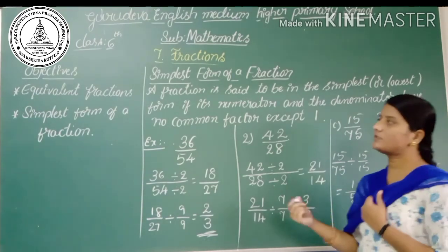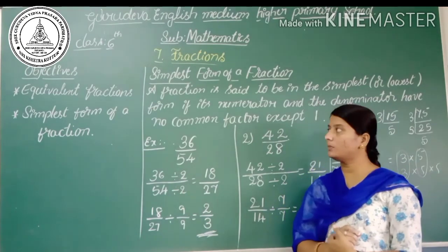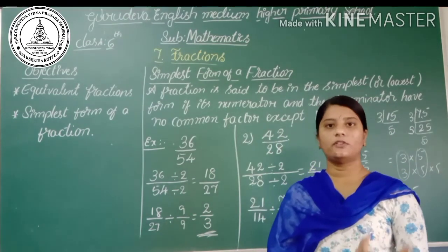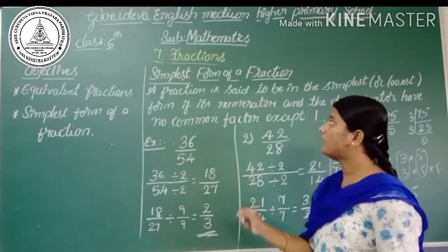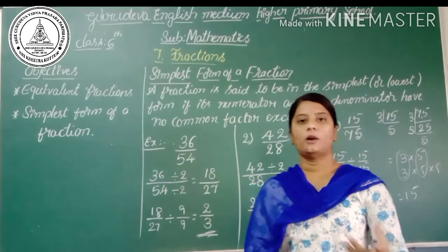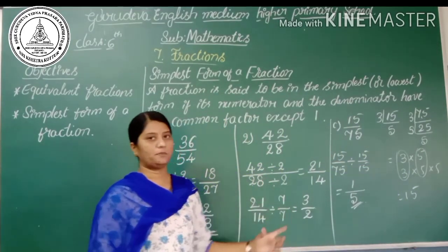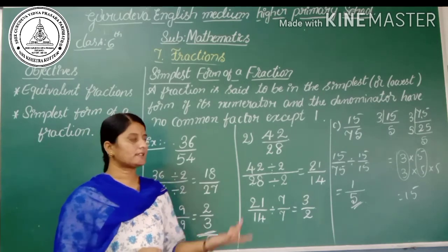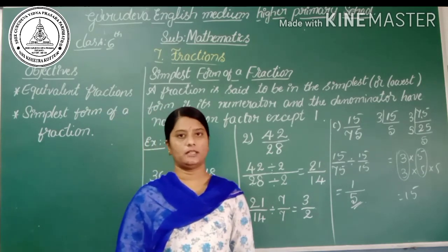In this class we have learned how to write the equivalent fractions of a given number, how to check whether two given fractions are equivalent or not, and how to write a fraction in its simplest or lowest form. In the next class, we are going to solve exercise 7.3. Thank you.